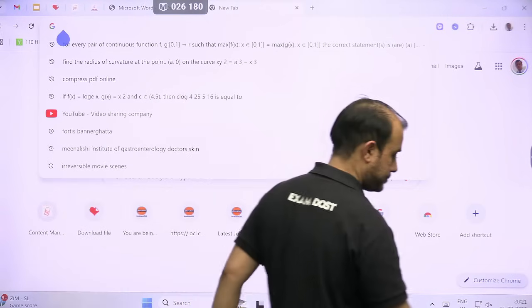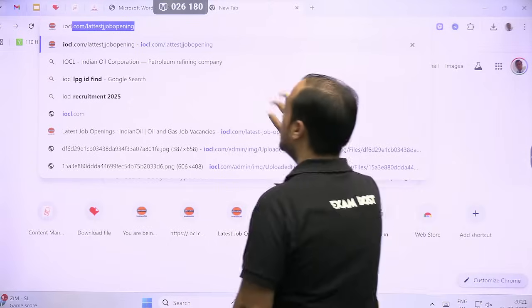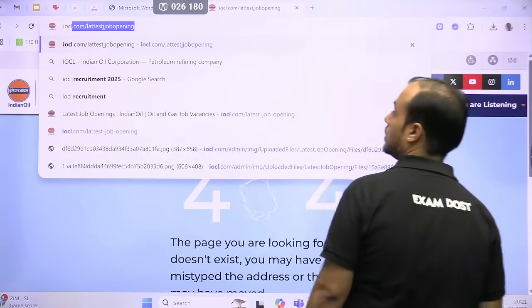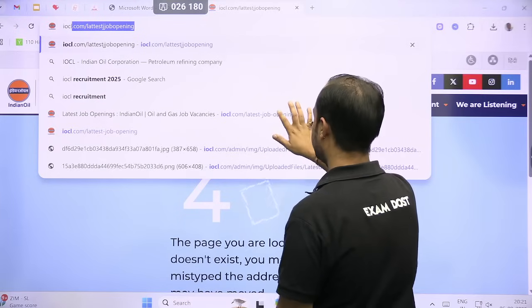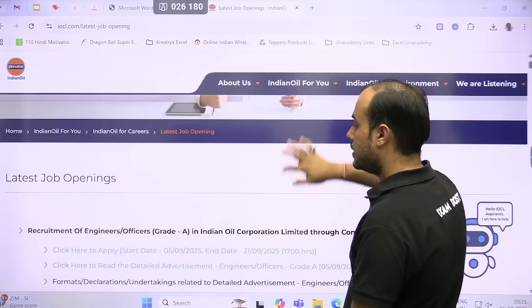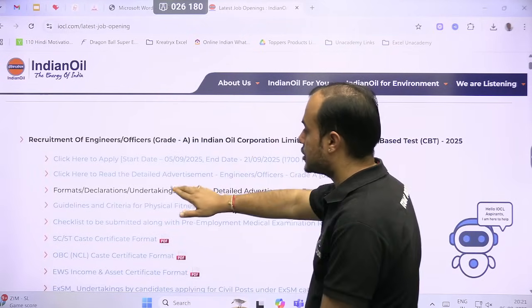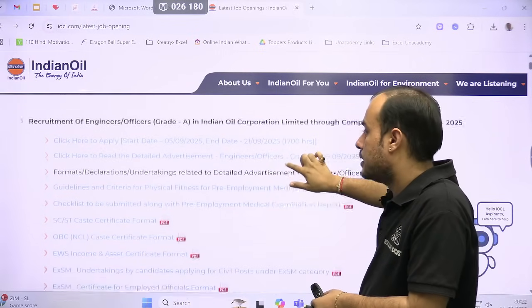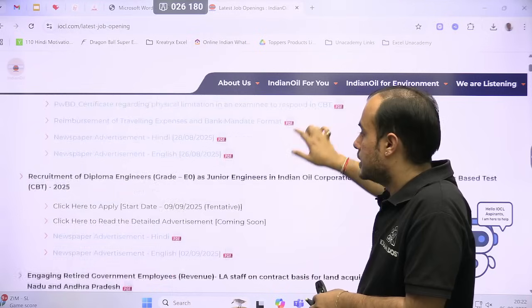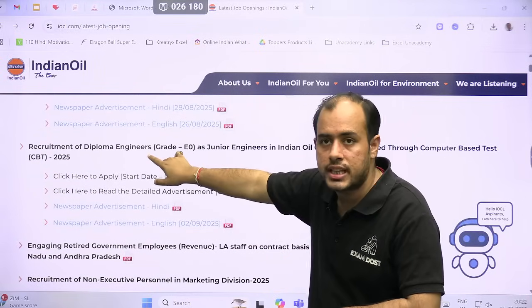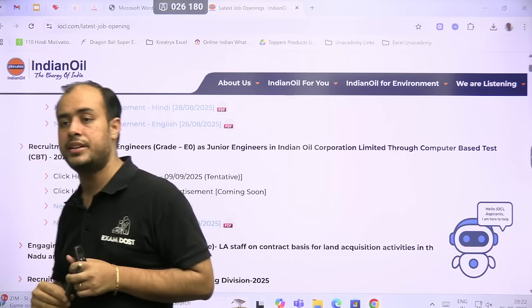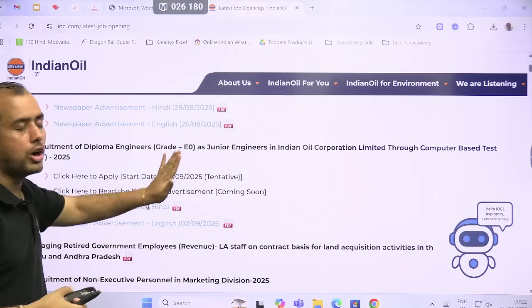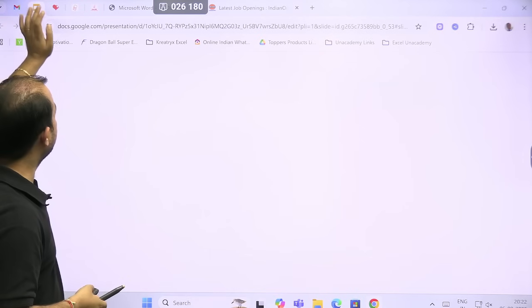So as I told, those who joined the HPCL batch, from the same batch you can crack this IOCL exam as well. Now let me show you the IOCL website. This is the latest job opening website. Now, this is the application link—click here to apply. It has started from 5th September; it will end on 21st of September. This is the recruitment, and also they have launched the recruitment of diploma engineers, the advertisement that I discussed in my previous video. Now it is available on the website—you can just go and check it out and you can apply for this also, for all my AE and JE students.